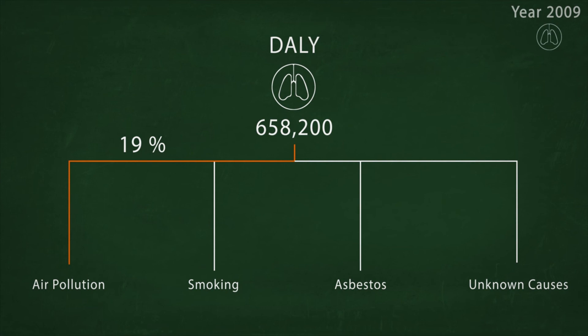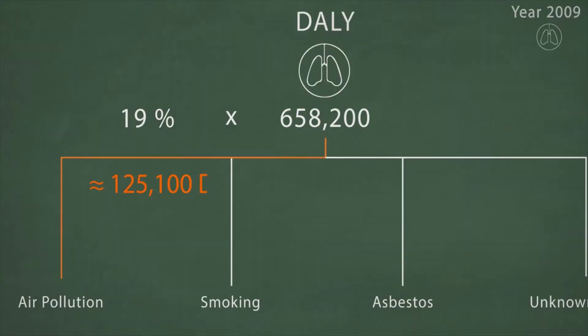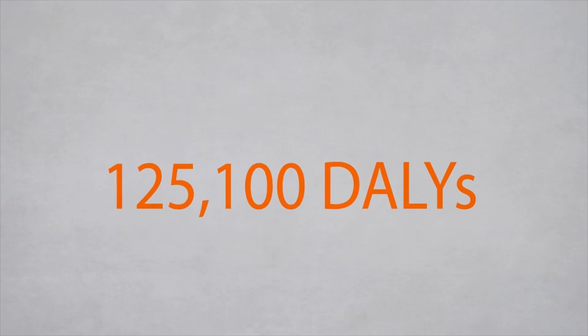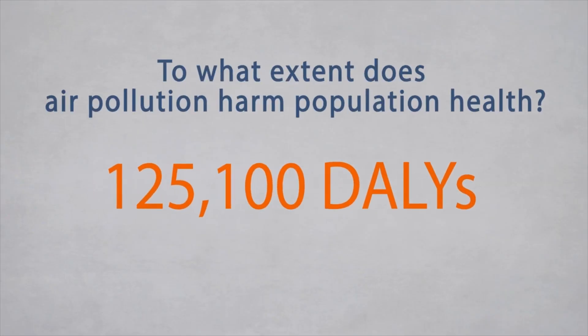This percentage is multiplied by the DALYs estimated for lung cancer, which shows that in Germany in 2009, 125,100 DALYs were lost due to lung cancer resulting from air pollution. So we found an answer to the question of to what extent air pollution harms population health, and can see that air pollution is a considerable threat to population health.